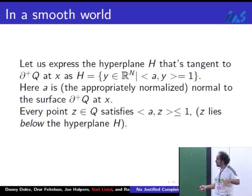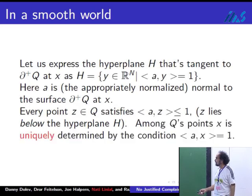This hyperplane, to be tangent, means that this vector A here is a normal to Q at the point that it touches this domain Q. Every point Z in Q is determined by satisfying all this collection of uncountably many inequalities of this form. Every hyperplane that's tangent, you have to lie under this hyperplane. Now think about this. You have a smooth domain like this, a point on the boundary.